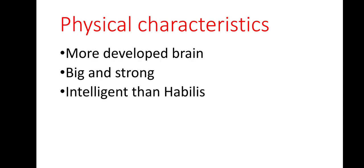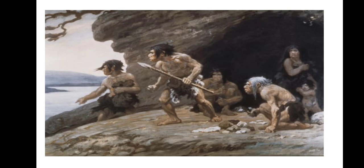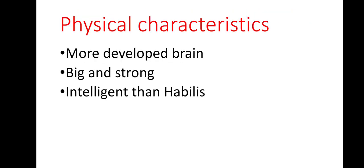There are certain physical characteristics, or biological features, of this type of human beings. If you compare Homo Neanderthal with Homo habilis and Homo erectus, you will find that these men were big and strong — physically very strong. The brain was more developed as compared to earlier species of humans like Homo erectus and Homo habilis.